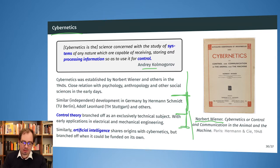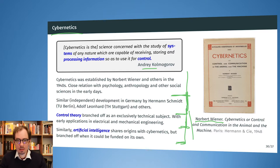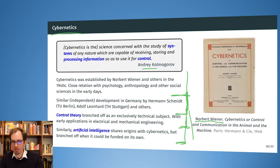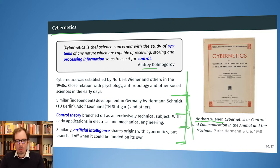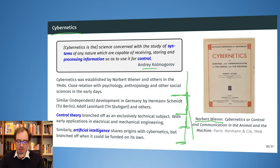Control theory, as it is considered today by electrical and mechanical engineers, essentially branched off from the original cybernetics term. In Stuttgart you can still study "Technische Kybernetik," but essentially today this is control theory in a mathematical and systems sense — no longer including psychology or the social sciences. Some early researchers in artificial intelligence were also in the cybernetics community, but after the famous Dartmouth conference they branched off and got their own funding and their own brand for doing artificial intelligence.